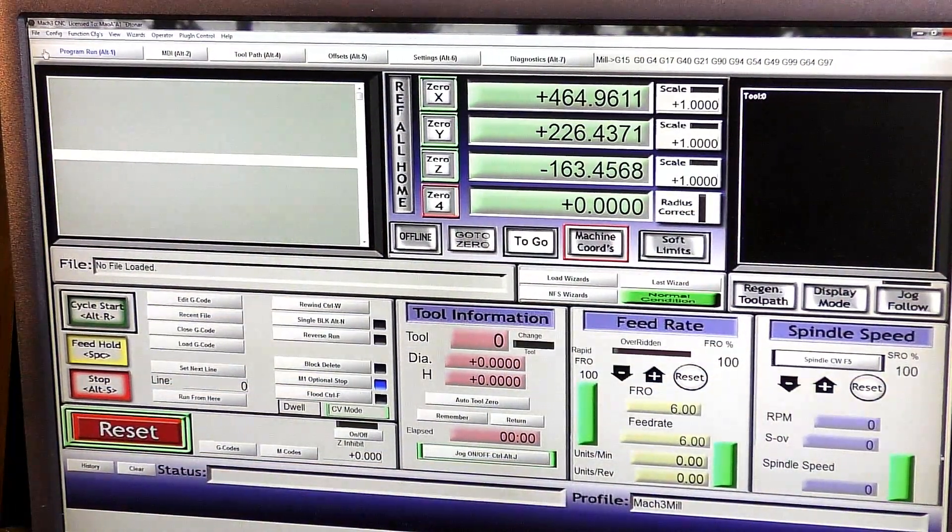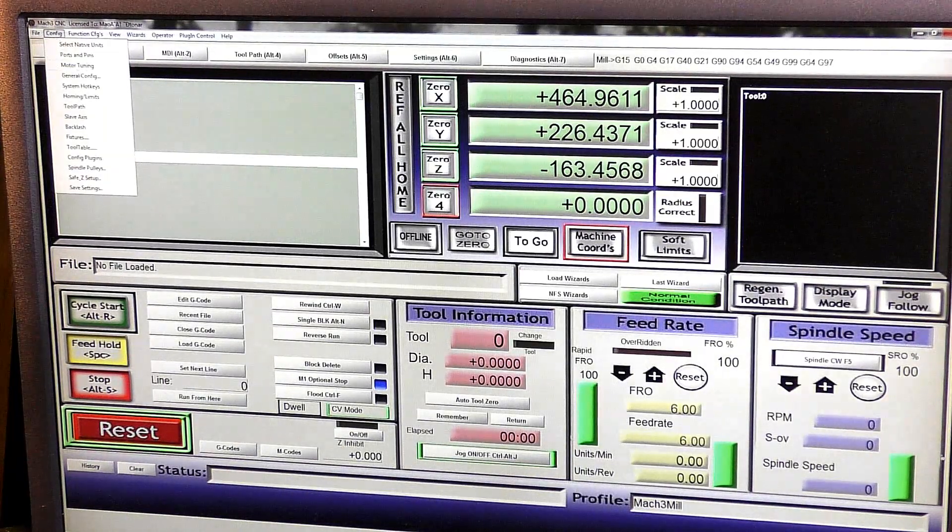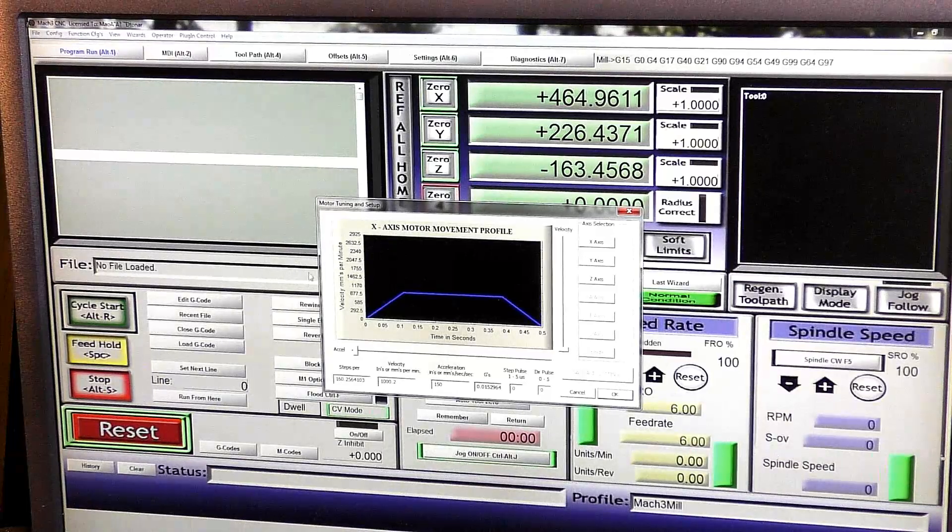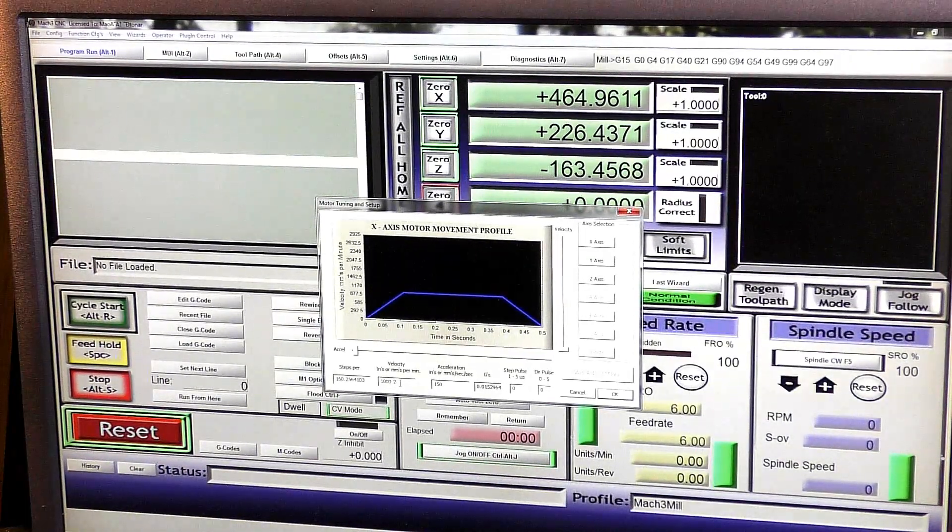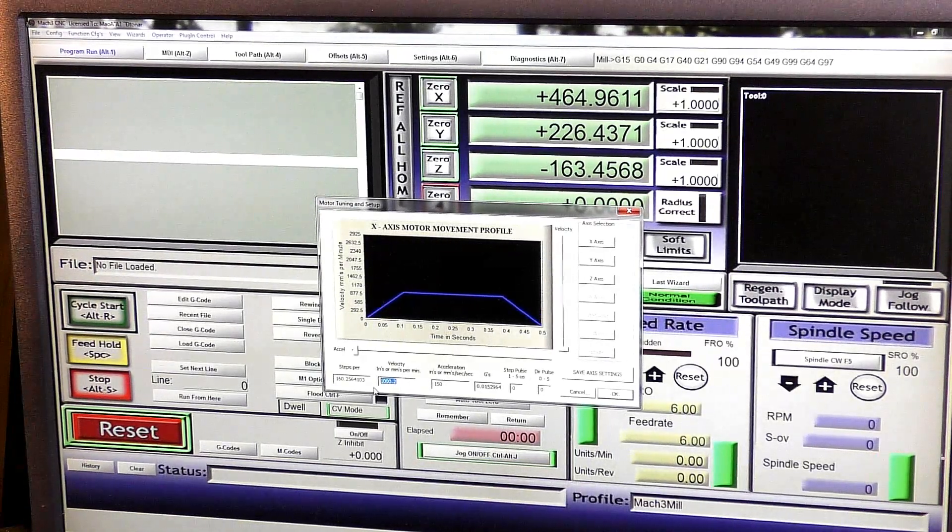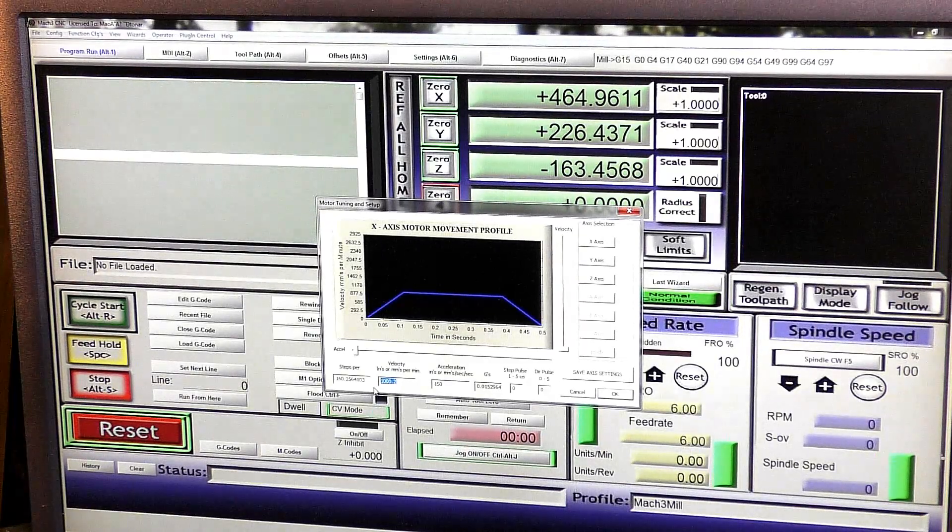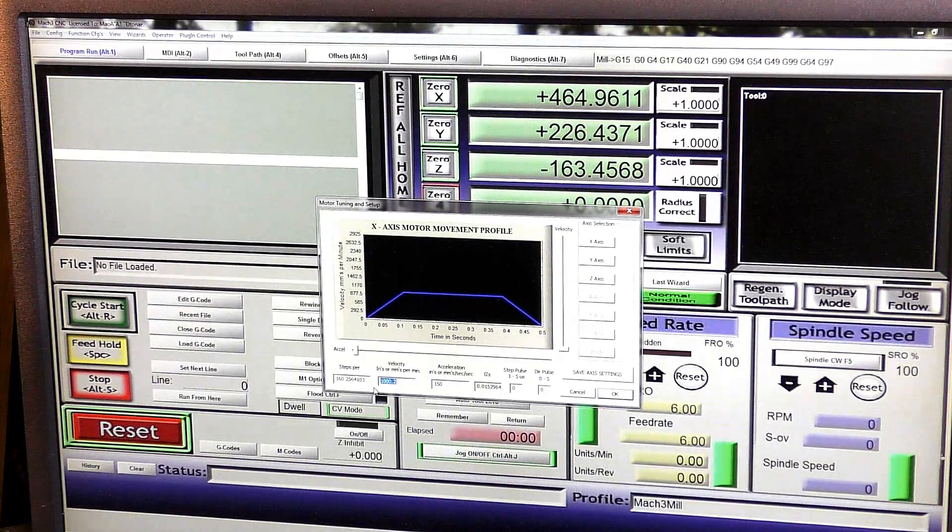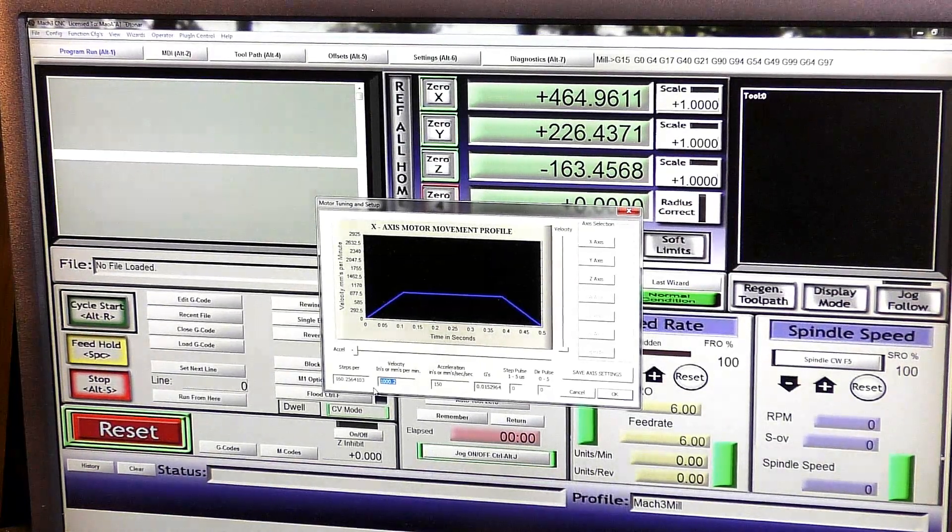So now we're going to speed the axes up. We come into Config, Motor Tuning, and we can raise this up now. As this is a brand new machine and I like to have full control, I'm going to take this up to 3000 millimeters per minute.